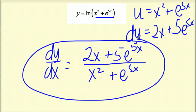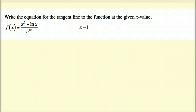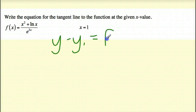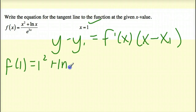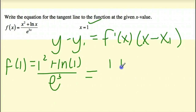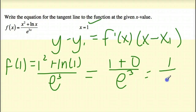Let's do one tangent line problem. It says write the equation of a tangent line to the function given the following x value. The tangent line formula is y minus y₁ equals f prime of x times x minus x₁. I have my x₁, but I need to find my y. Plugging in x equals 1, f of 1 equals 1 squared plus ln of 1, over e to the 3 times 1. This gives me 1 plus 0 over e to the third, since ln of 1 is 0, which is 1 over e to the third.